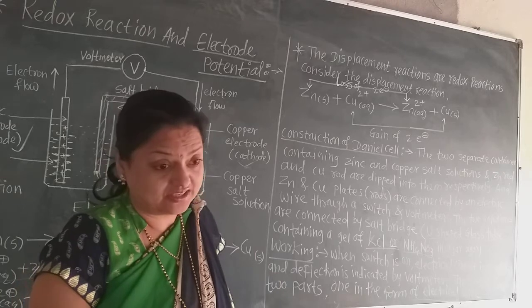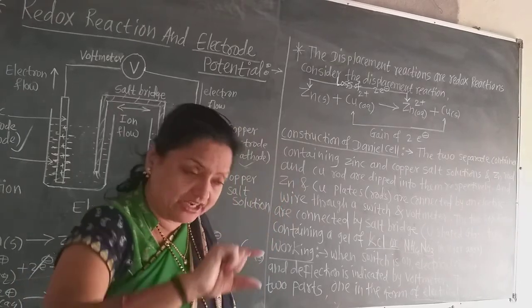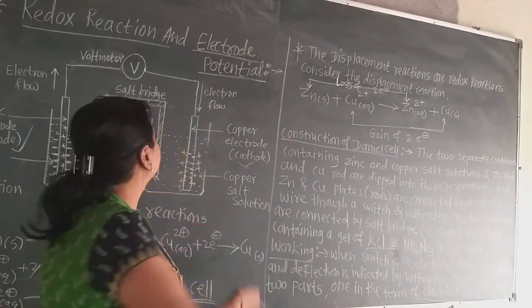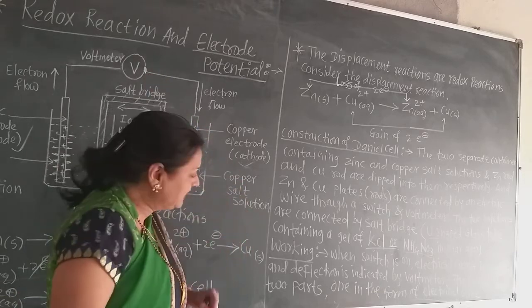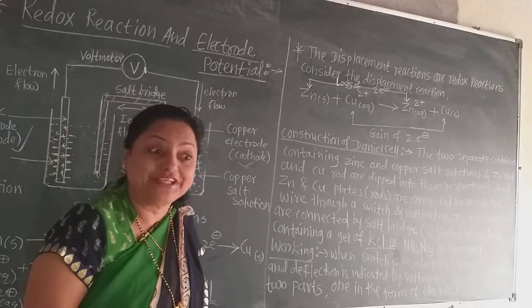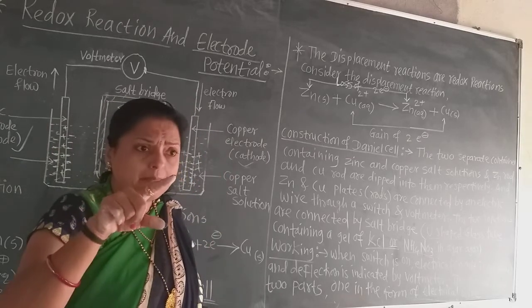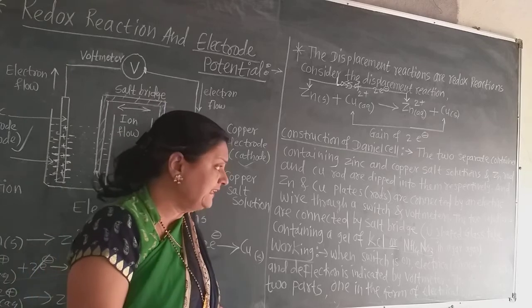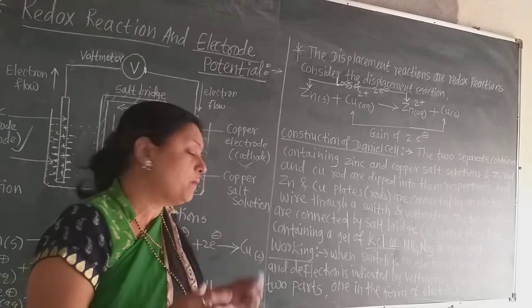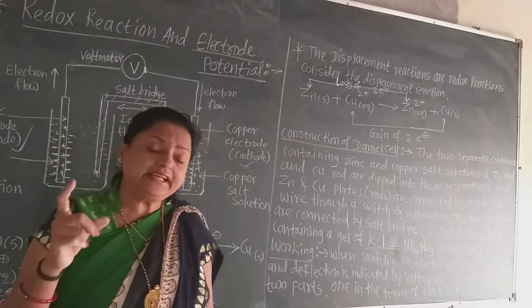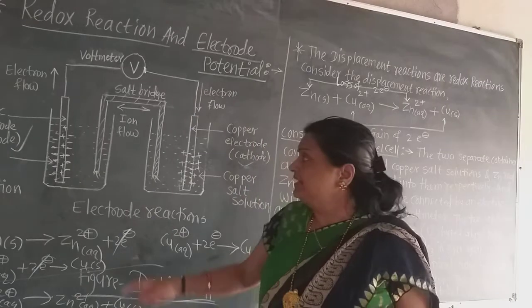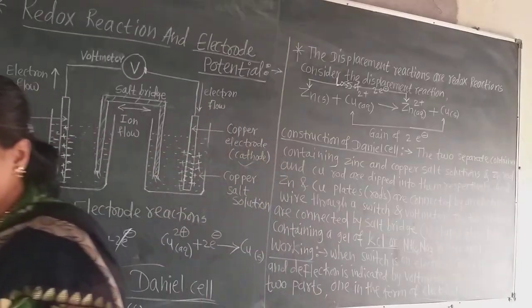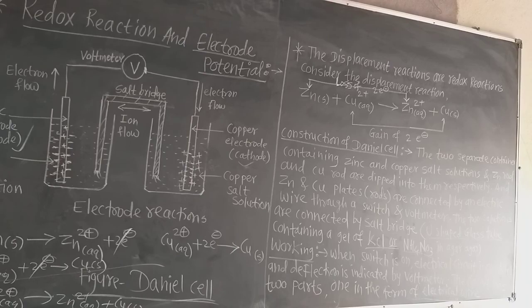How does this cell work? When the switch is on, the electric circuit is completed, and there is deflection indicated by the voltmeter — first it is at zero, but after connecting, the circuit is completed and there is deflection indicated by the voltmeter. This circuit has two parts: one part is in the form of electrical wire, and the other part is the electrode and its solution. These two parts work together to produce current.